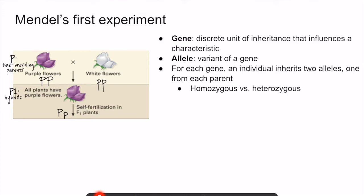An organism that has the same alleles for a gene of interest is called homozygous for that trait. For example, the true breeding flowers in the parental generation are homozygous — the purple flowers have two purple alleles, and the white flowers have two white alleles. An organism that has two different alleles for a gene is called heterozygous for that trait. For example, in the F1 generation, the plants each had a white allele and a purple allele for the flower color trait, so we call them heterozygous.